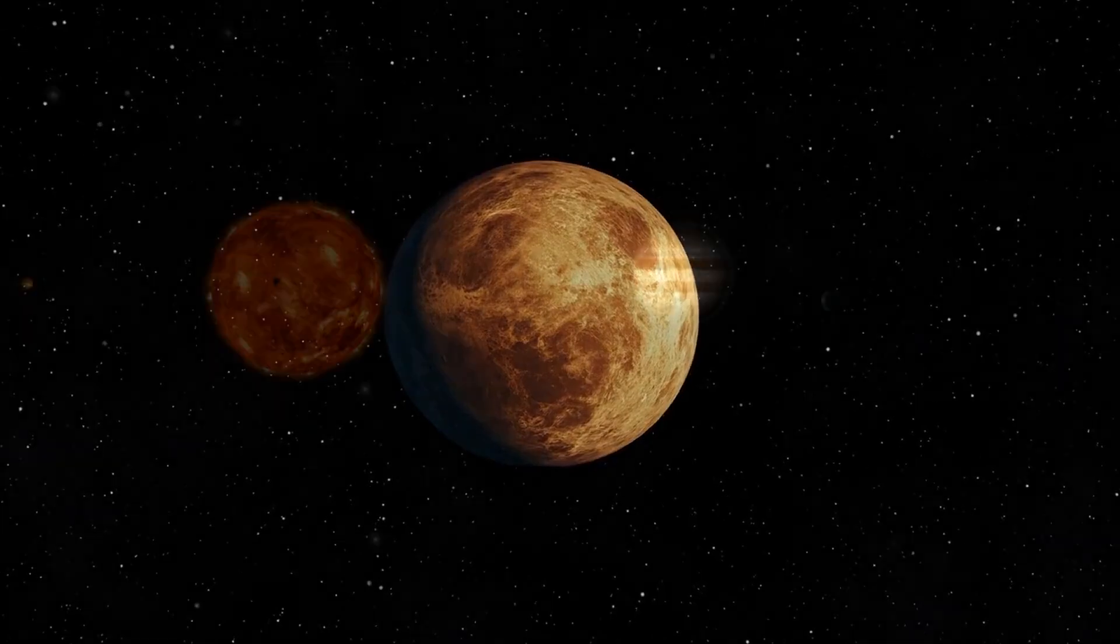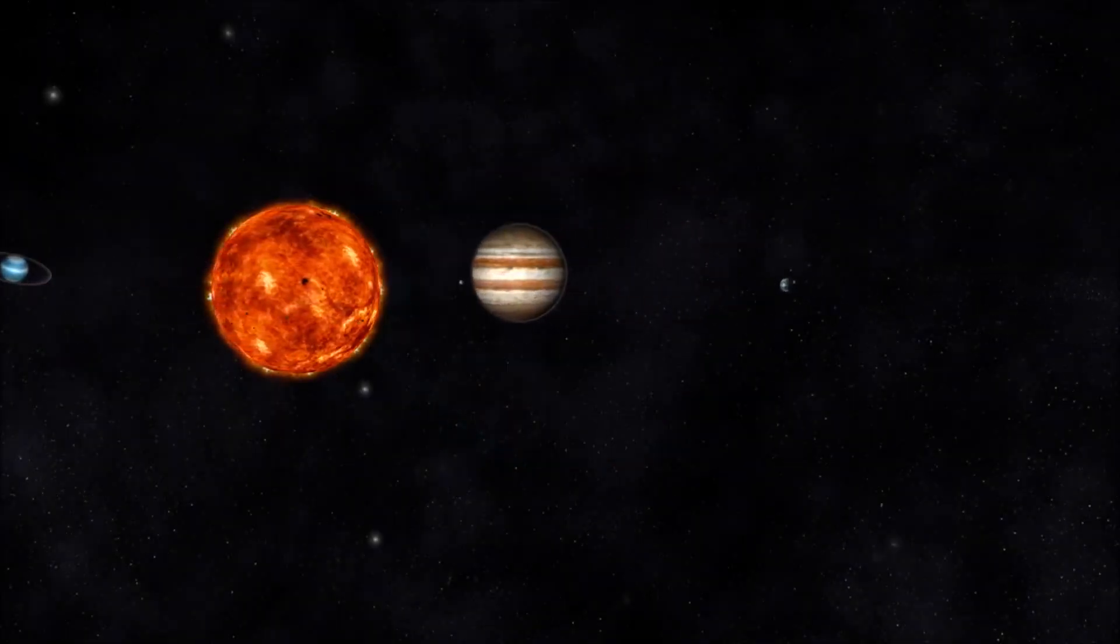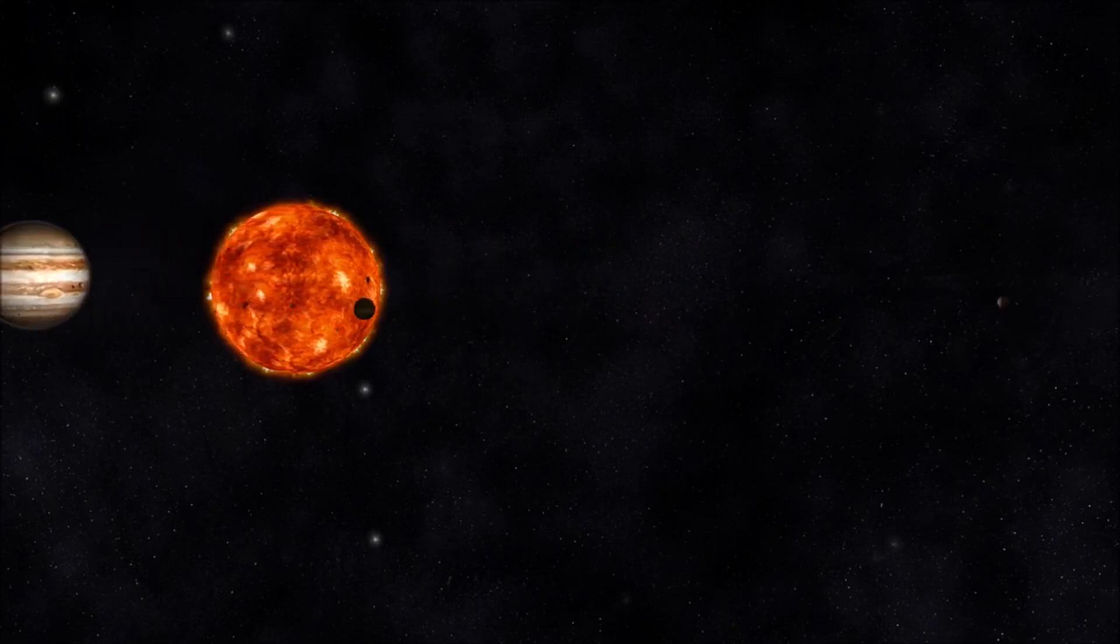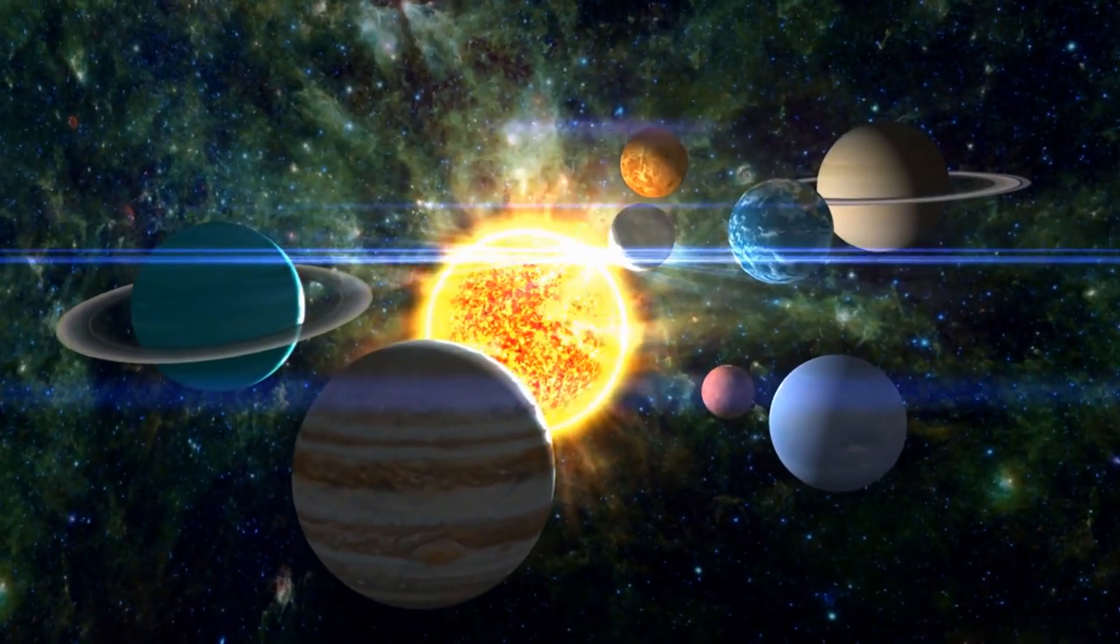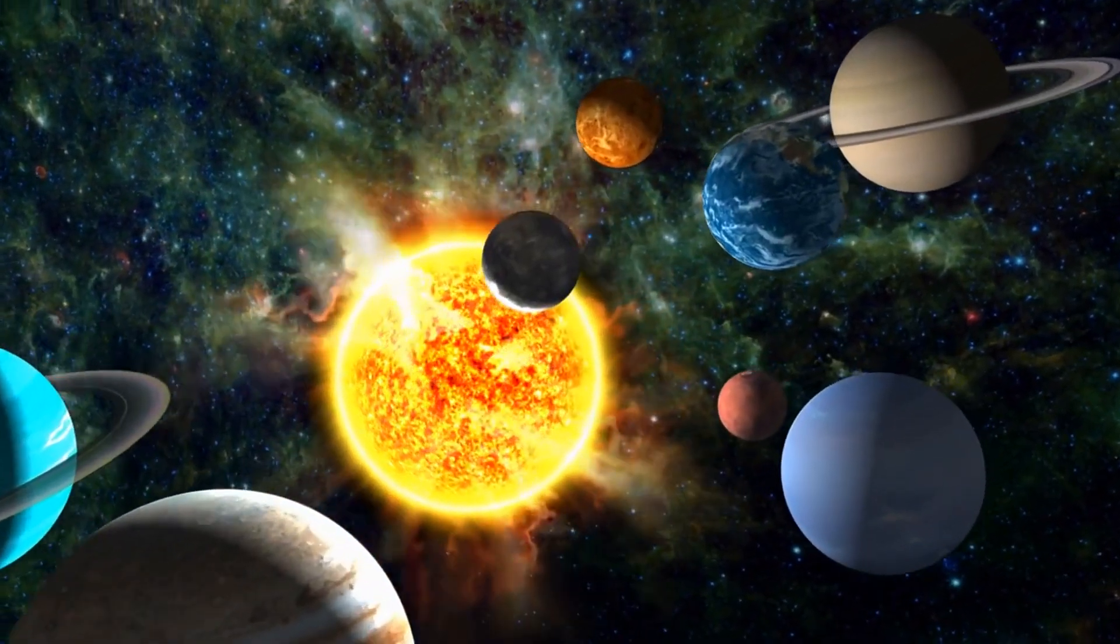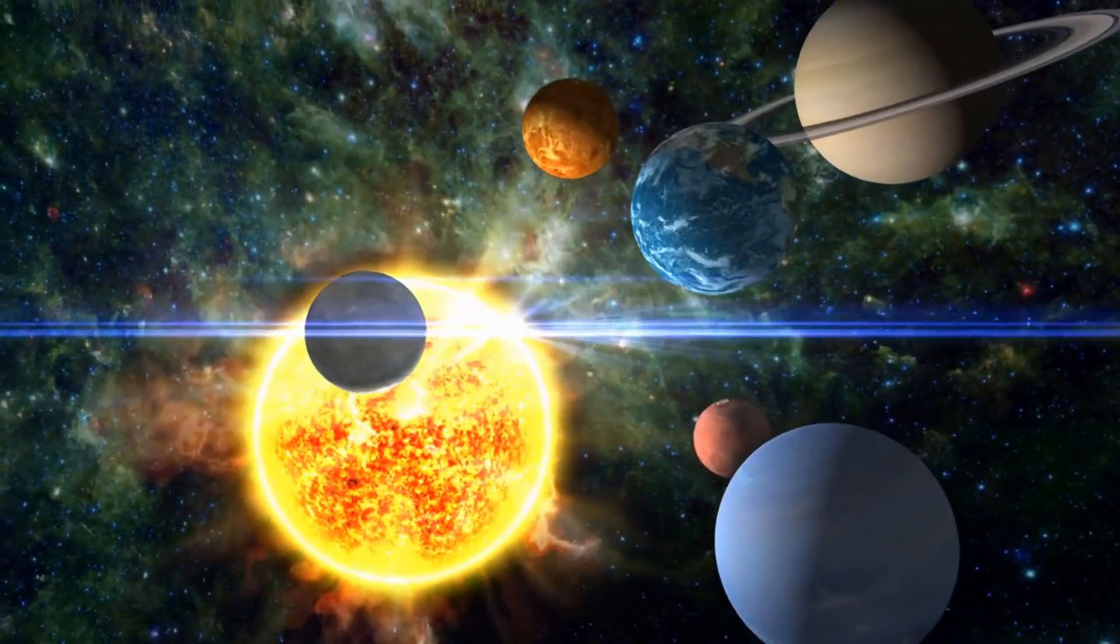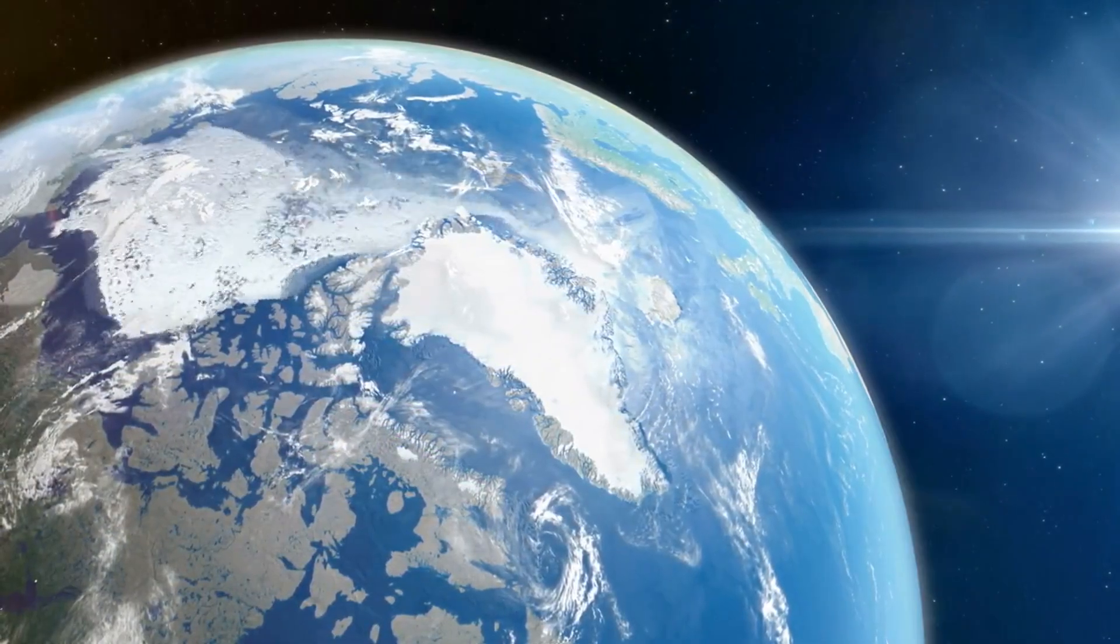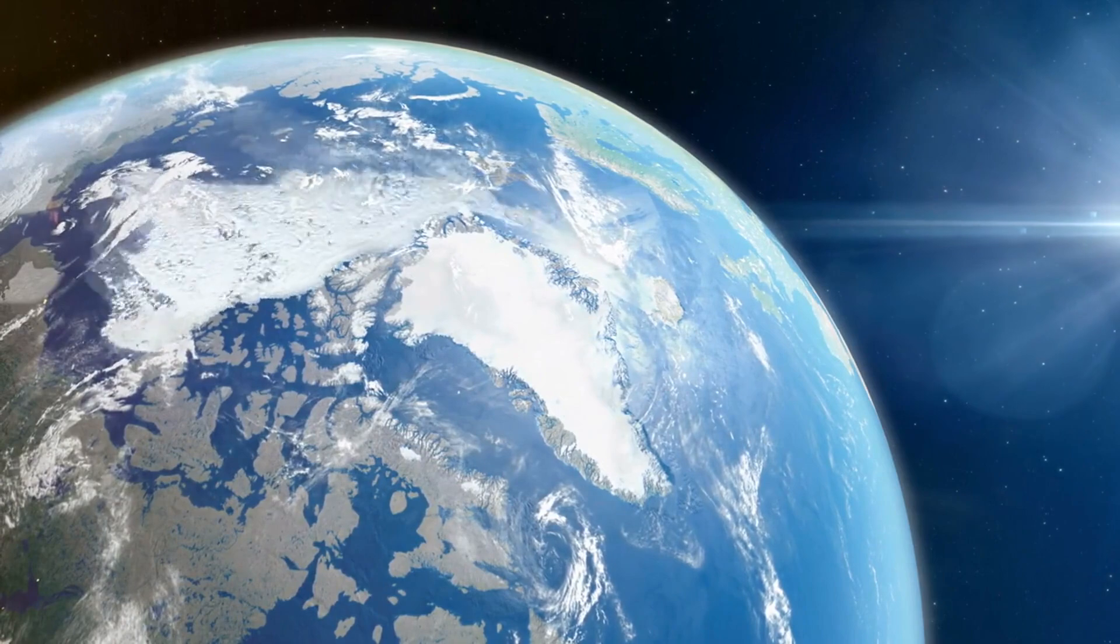But what about Earth? As the collision disturbs the inner solar system, Earth's orbit could be altered, even slightly. A shift in Earth's orbit might not seem significant, but over millions of years even the smallest change could cause massive climate shifts, triggering an ice age or, conversely, a runaway greenhouse effect.